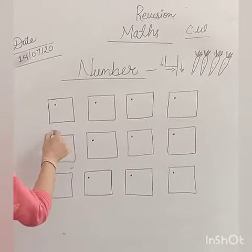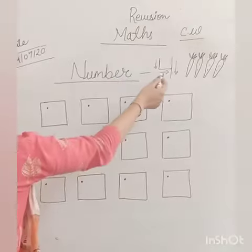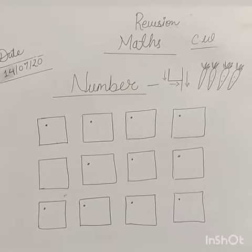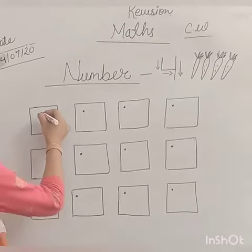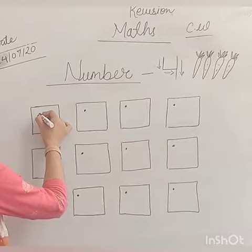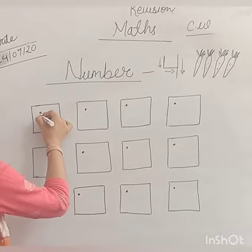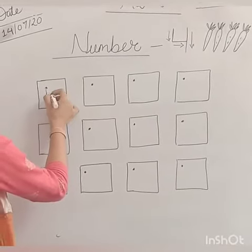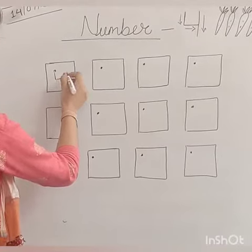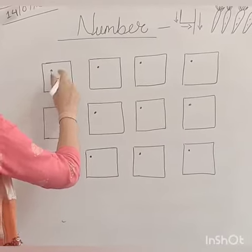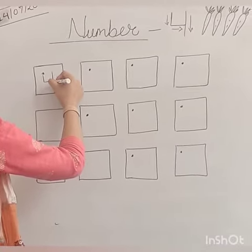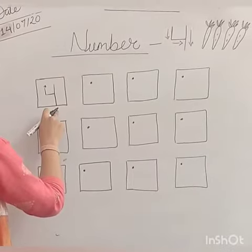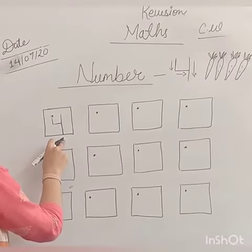So kids, now I am going to show you how to write number 4. So let's start to make number 4. Start from the dot and make a standing line to the middle like this. Then you will make a sleeping line like this. After this you will make a standing line to the bottom line. So kids, now we have done number 4.